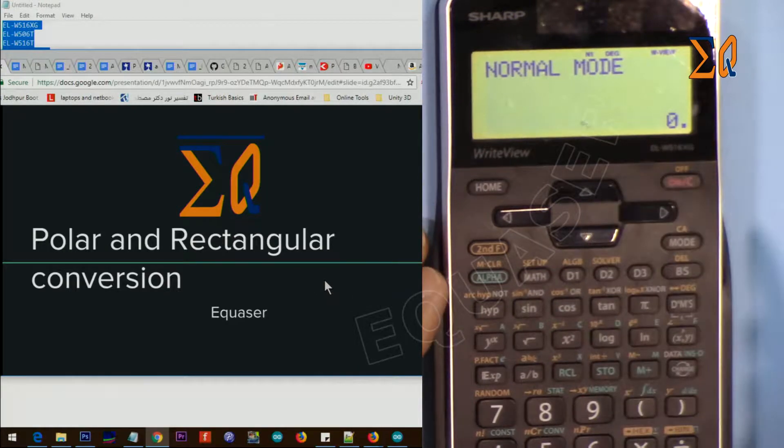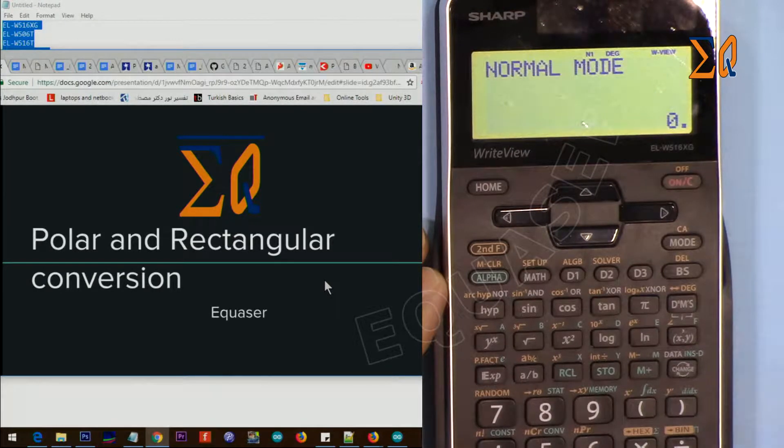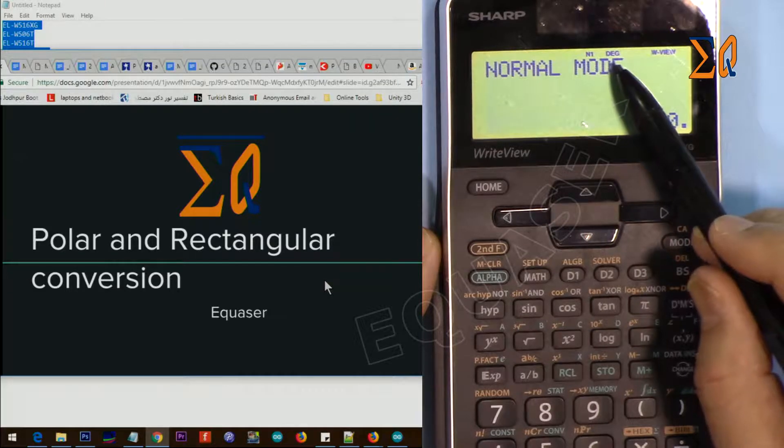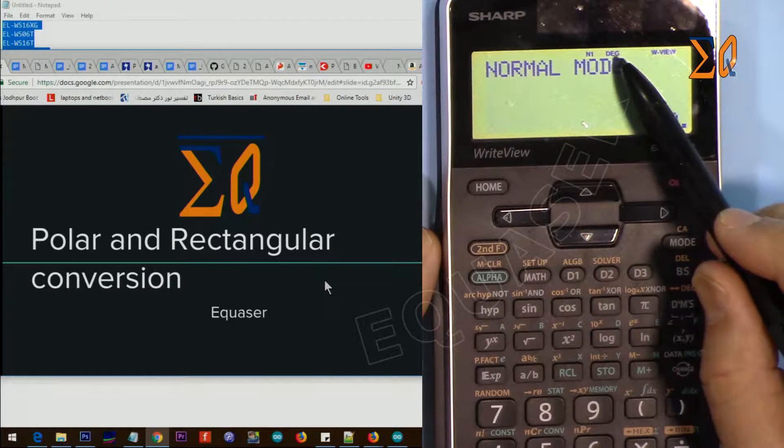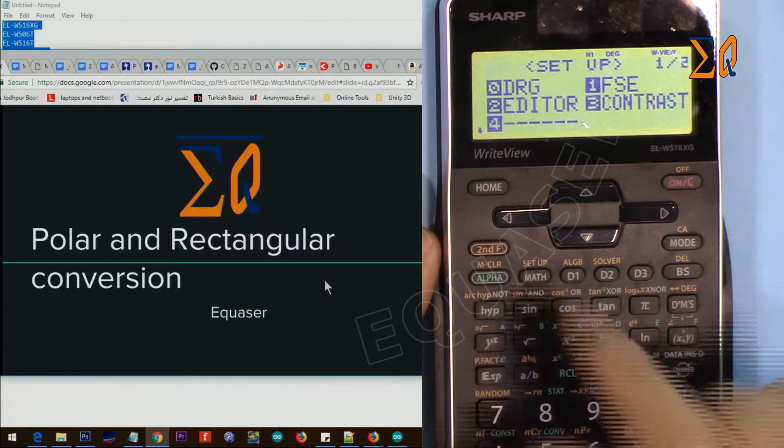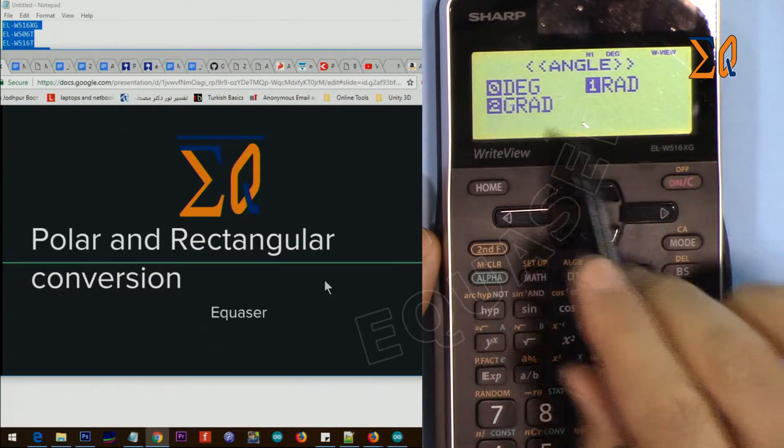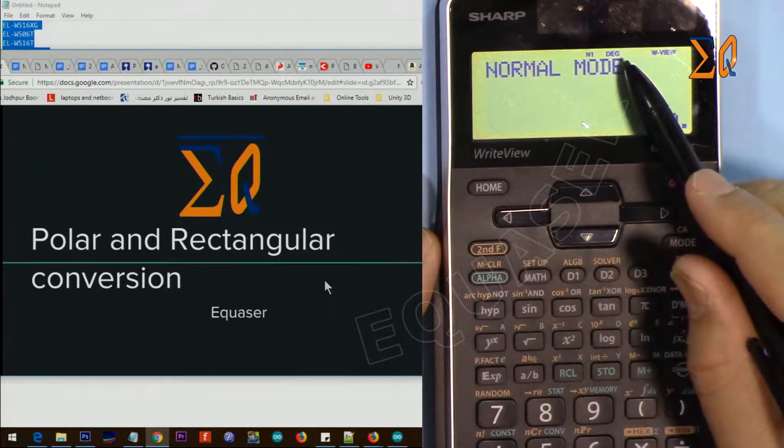So first, we have to be in normal mode. If not, just press Mode and then zero. You have to see normal mode here. And also the angle, depending on the type of value that you are entering. For example, this is now in degree. If you want to change it to degree, press second function Setup, and from this menu press zero. We have degree, radian, and gradient, and zero means degree.